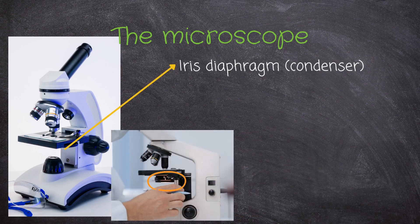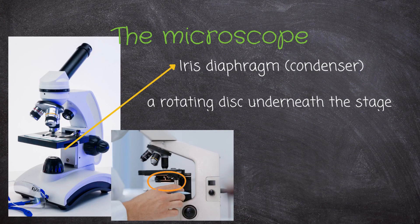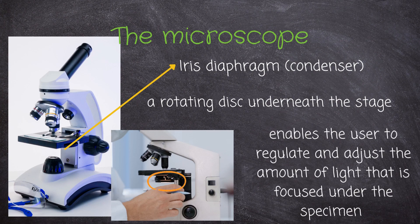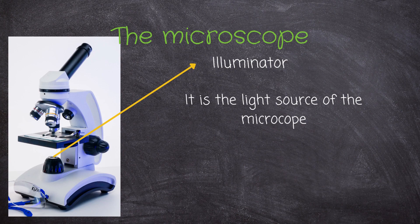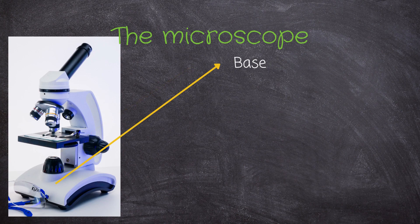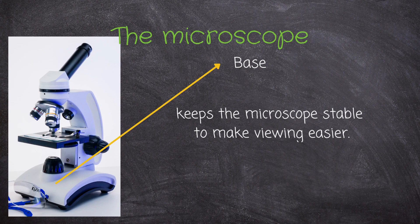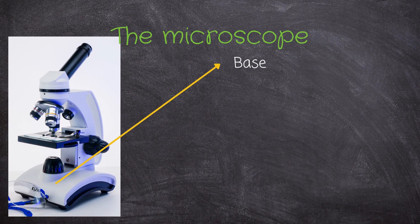Underneath the stage we find the iris diaphragm, or condenser, which is a rotating disc. It enables the user to regulate and adjust the amount of light that is focused under the specimen. That light comes from the illuminator.